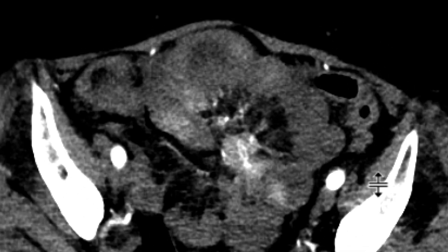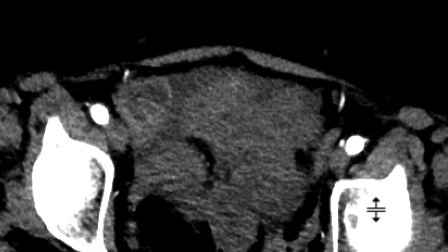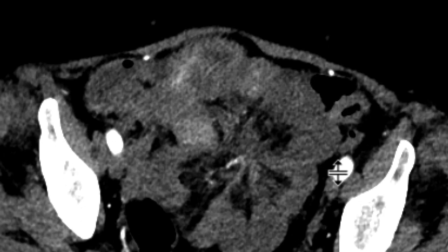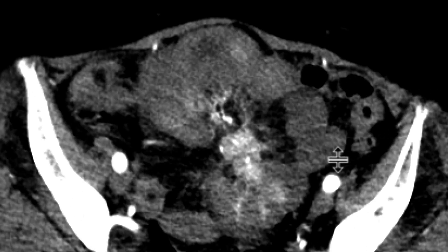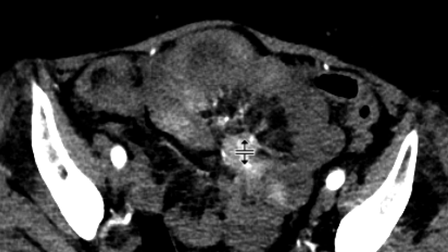We can start to appreciate that some of these bowel loops have low density within them — probably just fluid — but some of them also have this high-density content. There are other foci visible here and elsewhere as well.